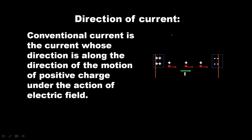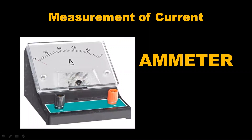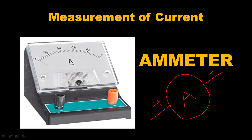To measure how much current is flowing in a circuit, we use the instrument called an ammeter. The ammeter is connected in series. Ammeter is used to measure the amount of current flowing through a circuit.